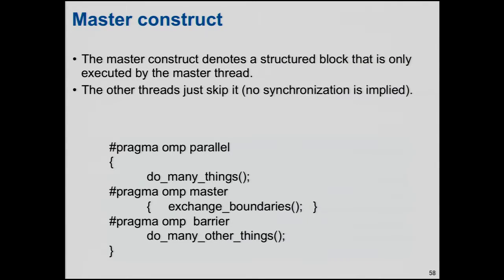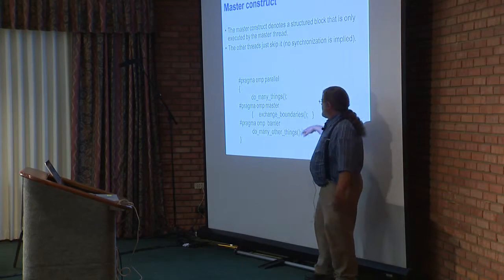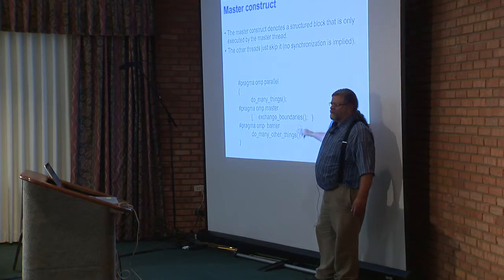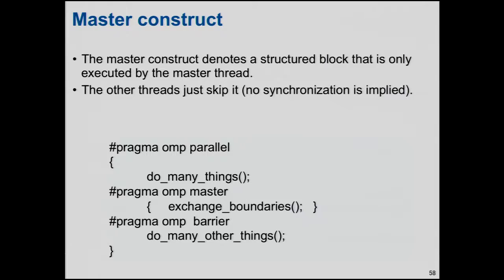The master construct is real easy and is used a lot with hybrid programming. It says the master thread will do the code within this construct; everyone else just skips it. There's no synchronization implied, no barrier implied. So the master thread does what's inside the construct while everyone else goes on. For example, in hybrid programming where I want one thread to do all the MPI, this is where I'd put my MPI calls.